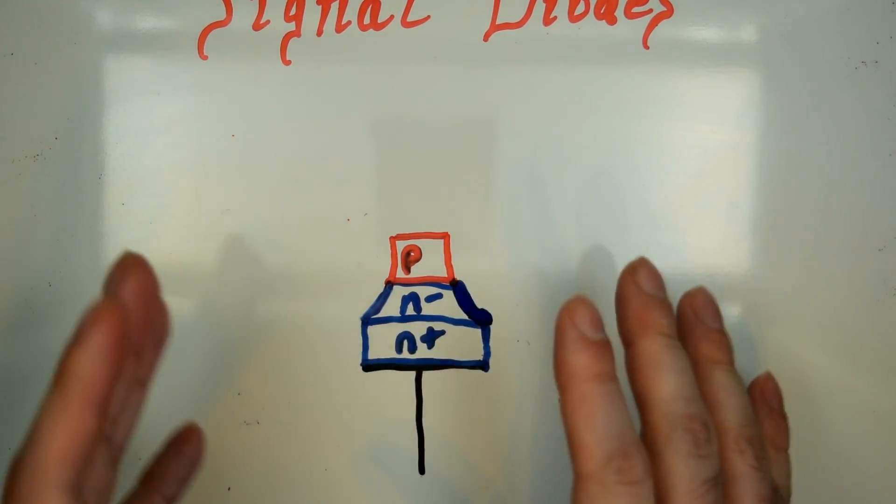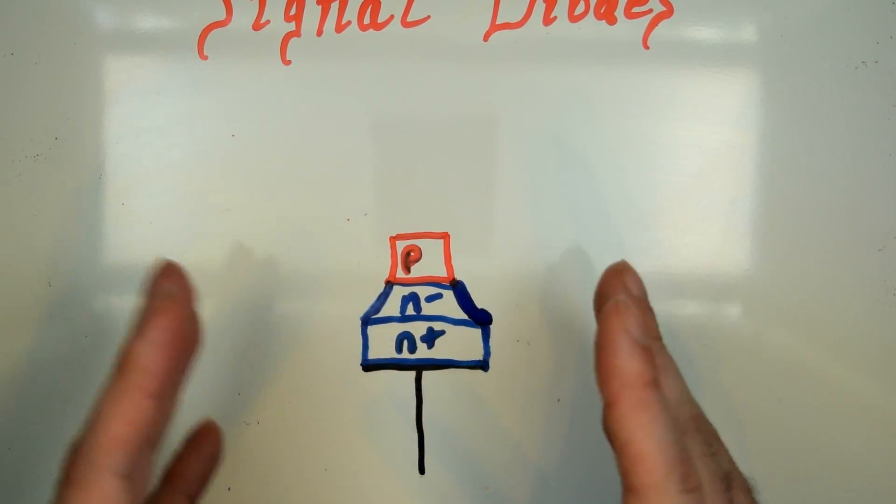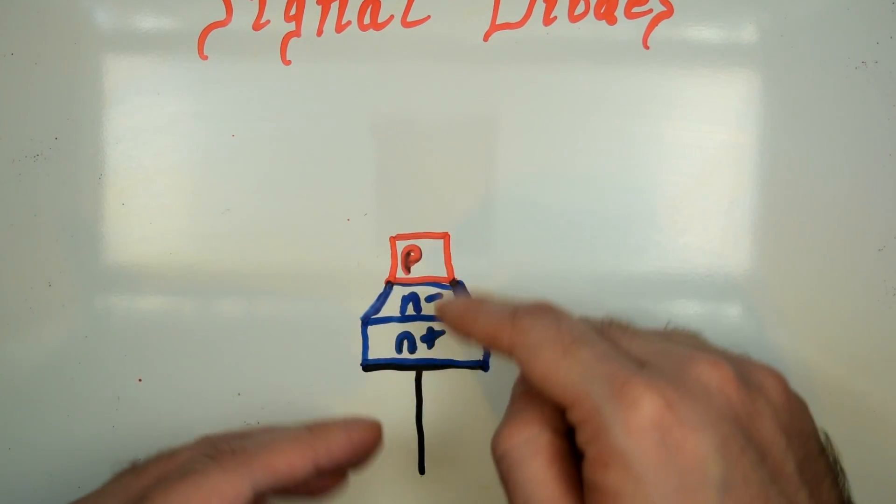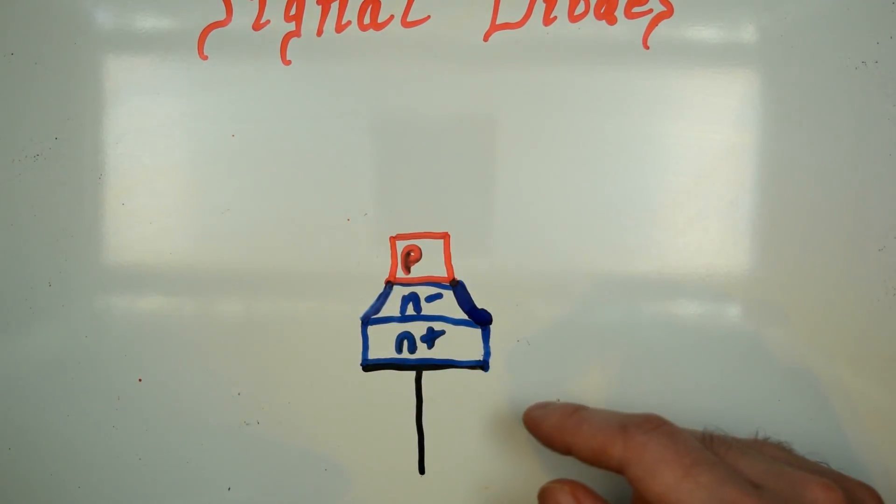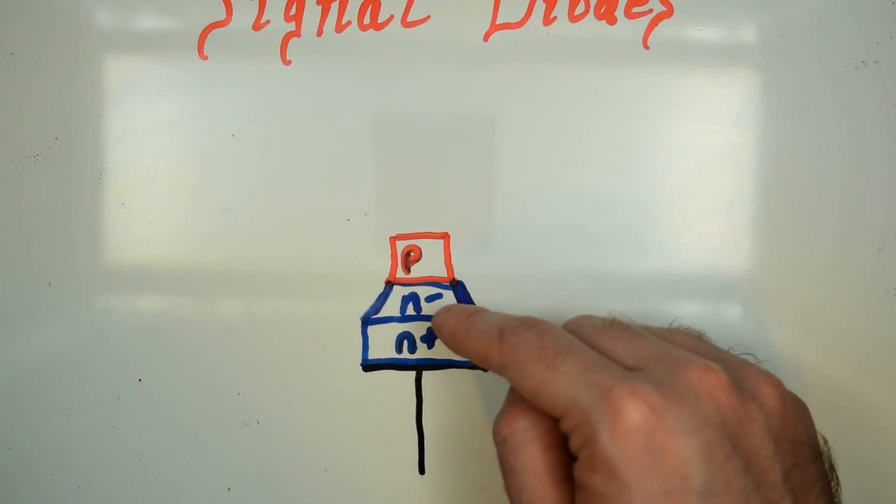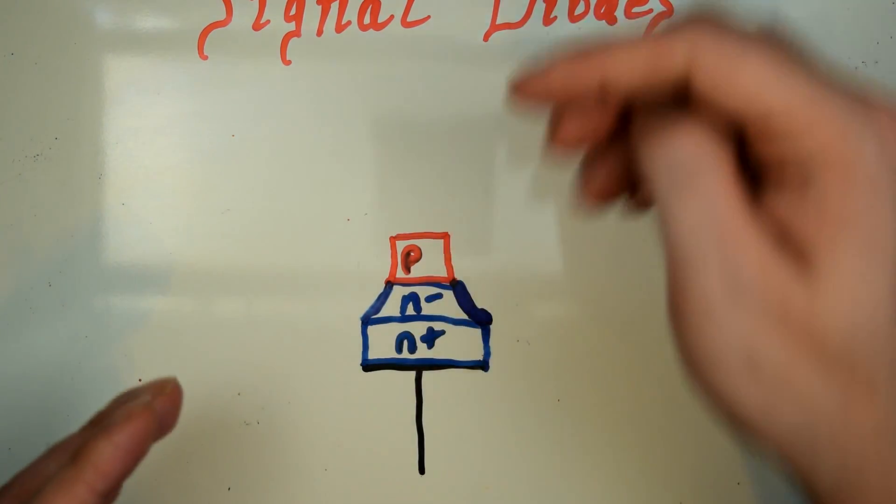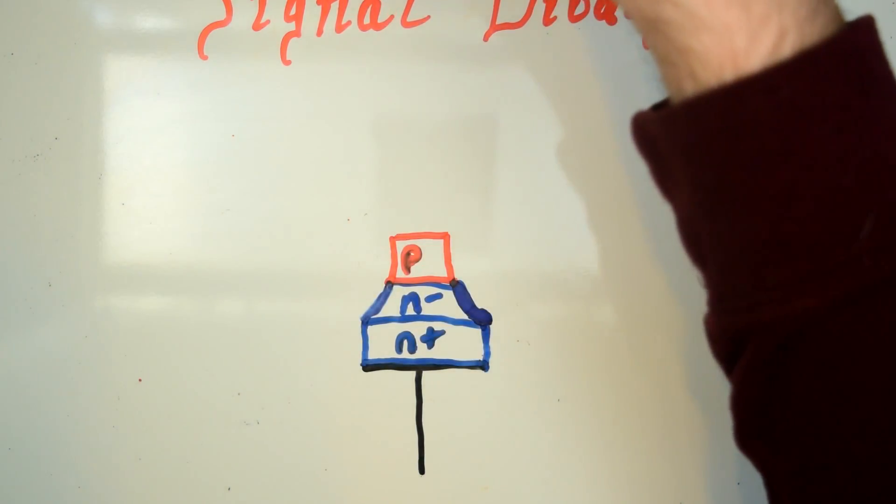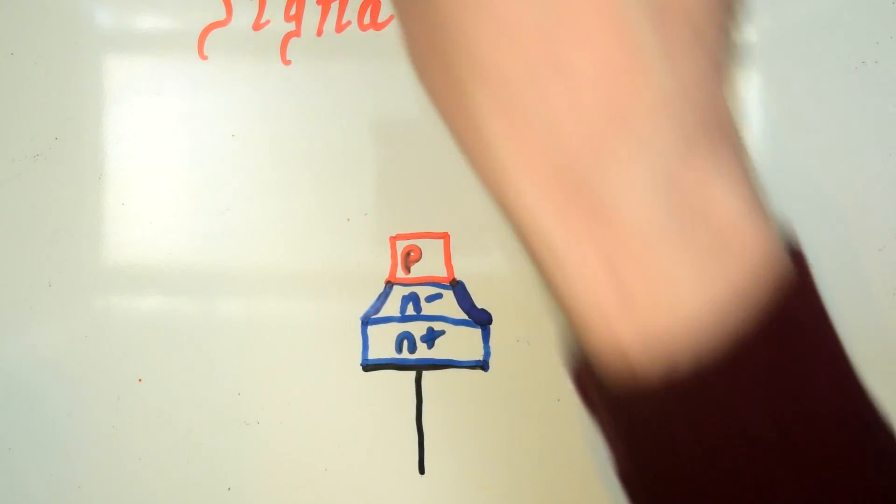Which reduces the capacitive, the parasitic capacitive nature of the junctions between the p and n materials. And having lightly doped n material here makes the diode able to recover much faster from being biased in reverse.